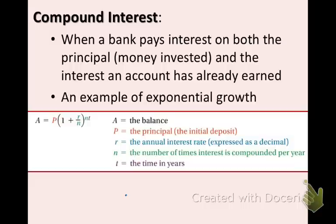Compound interest. I know you have heard this before. When a bank pays interest on both the principal, which is the money invested, and the interest an account has already earned. So compound just means it keeps building upon the previous amount. This is an example of exponential growth. This is the formula for compound interest. You want to write this formula in the box at the left. A equals P times the quantity 1 plus R over N to the Nt power.